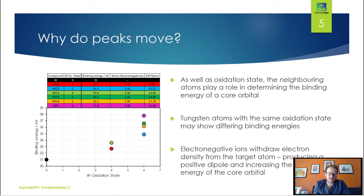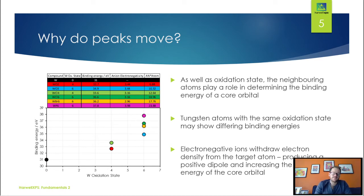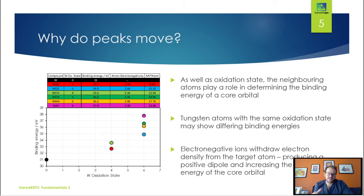Tungsten is a really nice example because we see a couple of oxidation states. We've got a couple of compounds that we can look at and we see some nice clear and obvious shifts in our data. Looking at our oxidation state on our plot, we've got tungsten metal, tungsten 4+ and tungsten 6+. You can see straight away that when we increase the oxidation state, the binding energy increases — a clear and obvious difference in our peaks.